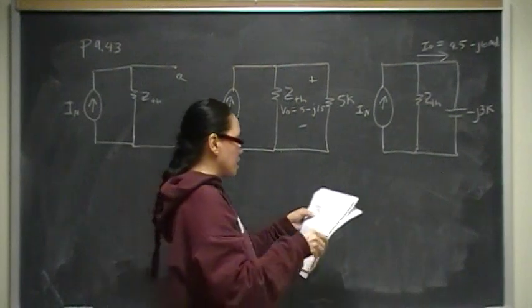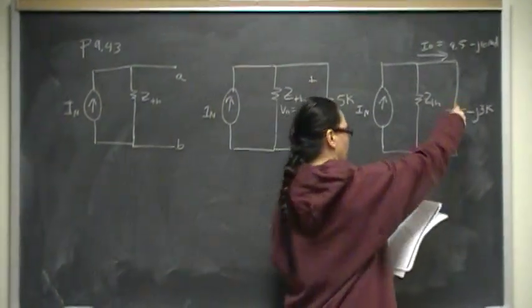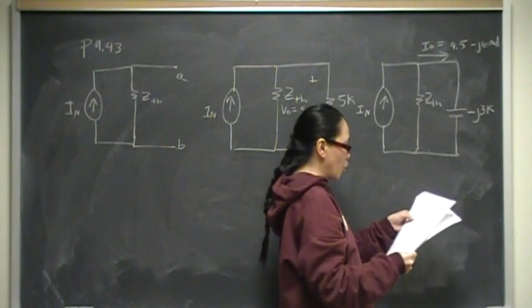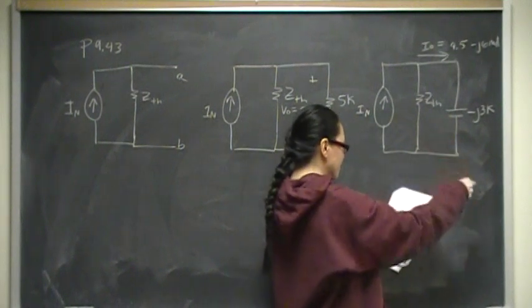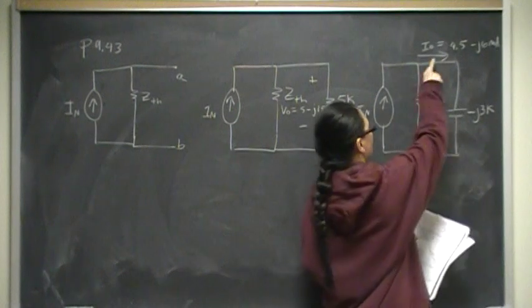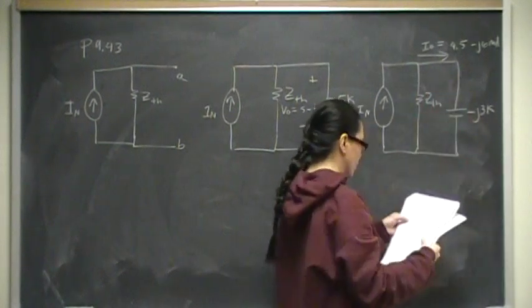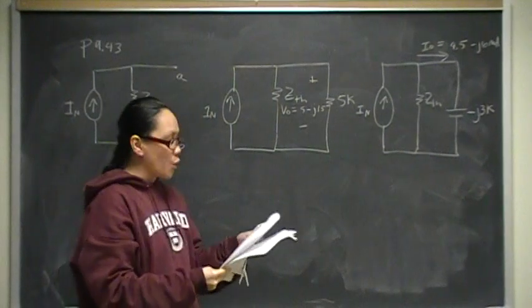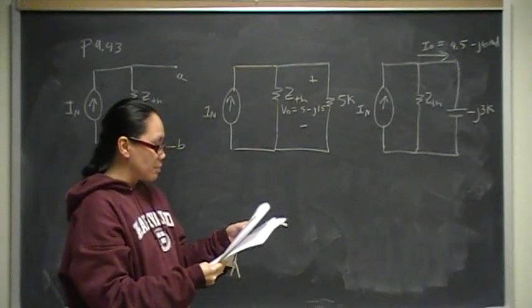In the second case, when a capacitor having an impedance of minus J3 kilo-ohms is connected across the device, the value of I-naught, which is some current going through the capacitor, is measured to be 4.5 minus J6 milliamps.